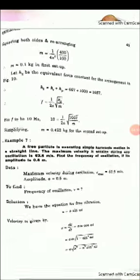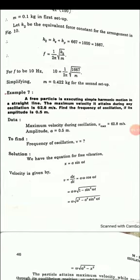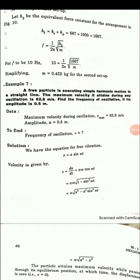Example 7: A particle is executing simple harmonic motion in a straight line. The maximum velocity it attains during any oscillation is 62.8 meter per second. Find the frequency of oscillation if the amplitude is 0.5 meter. So maximum velocity is 62.8 m/s and amplitude A is equal to 0.5 meter.